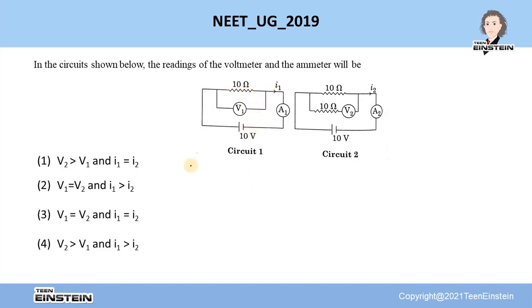Then obviously this is a very simple circuit and the current in the circuit will be 10 volt battery and this is 10 ohm. So this will give you 1 ampere current. Ammeter A1 will show you 1 ampere.